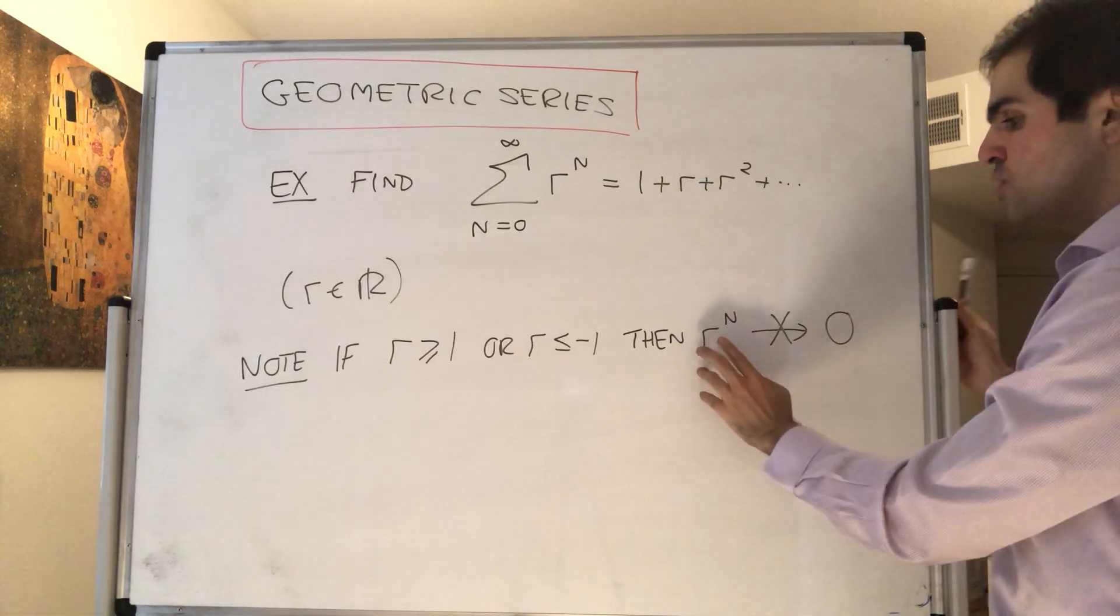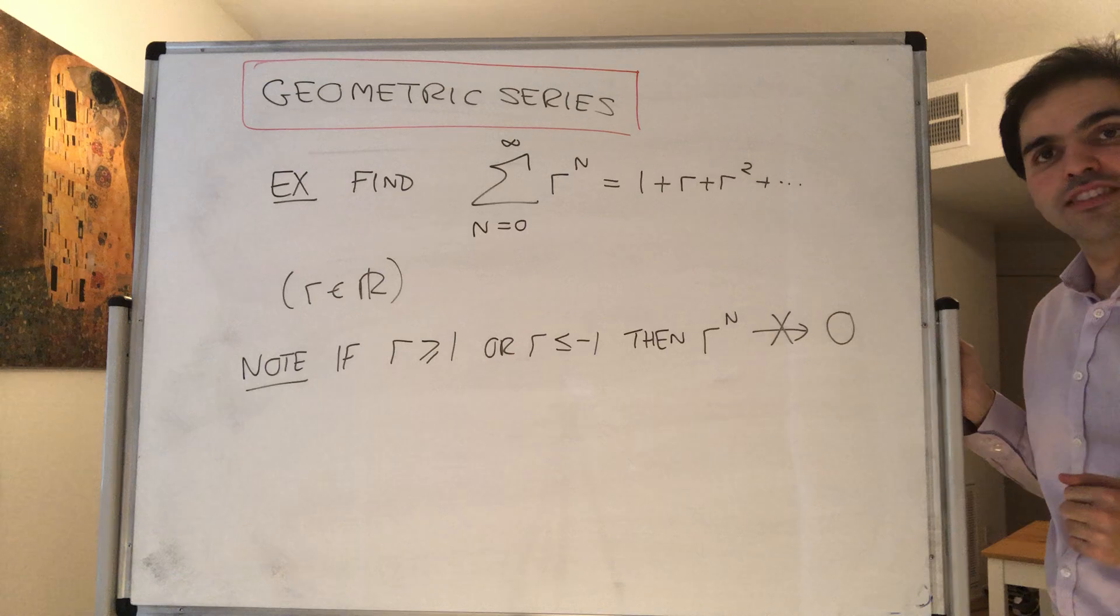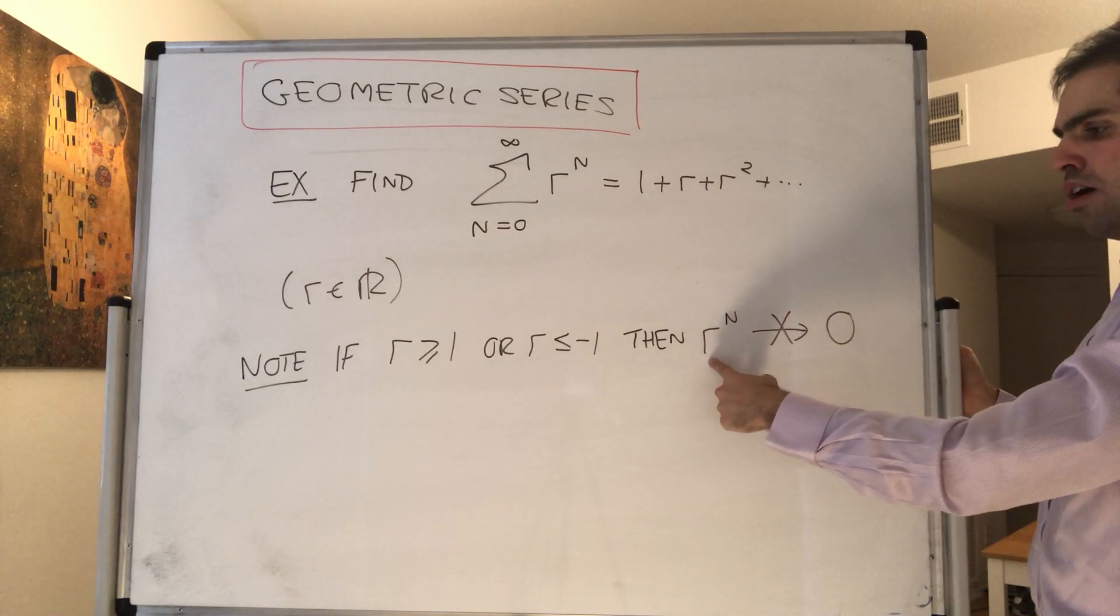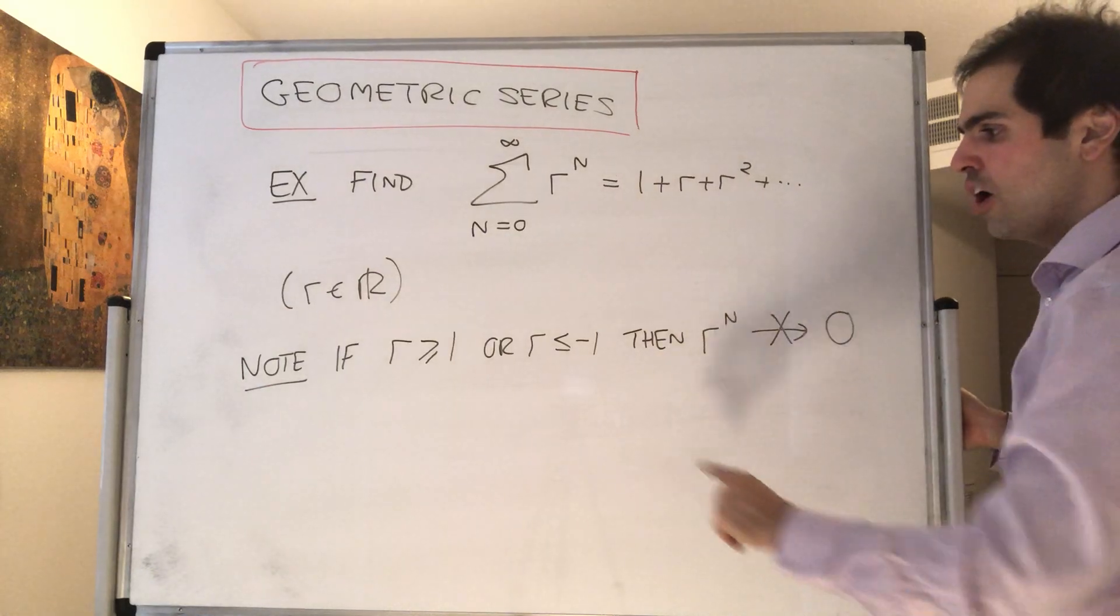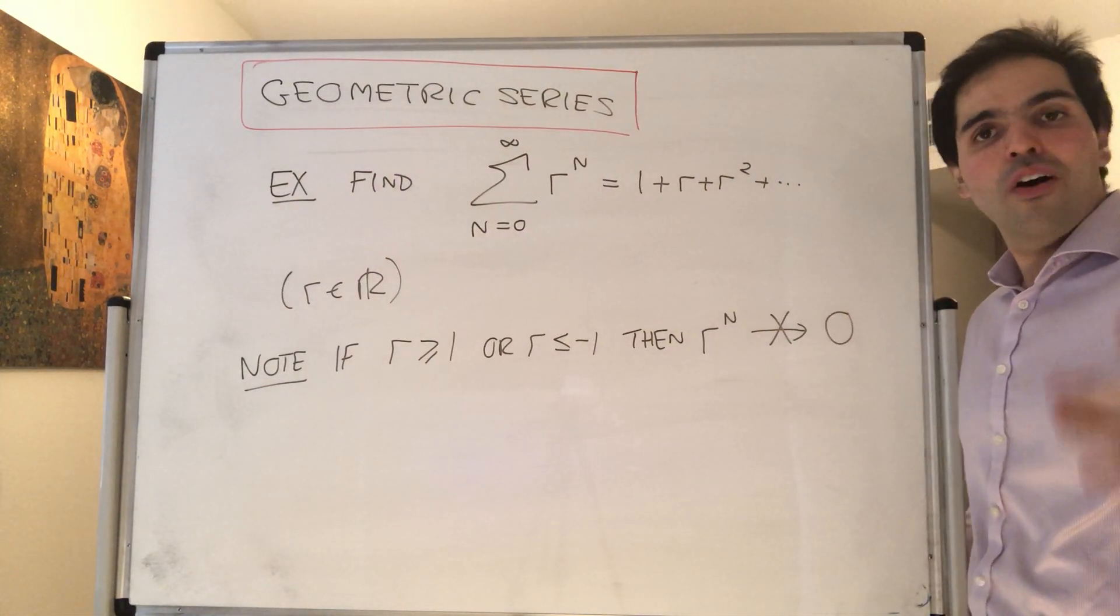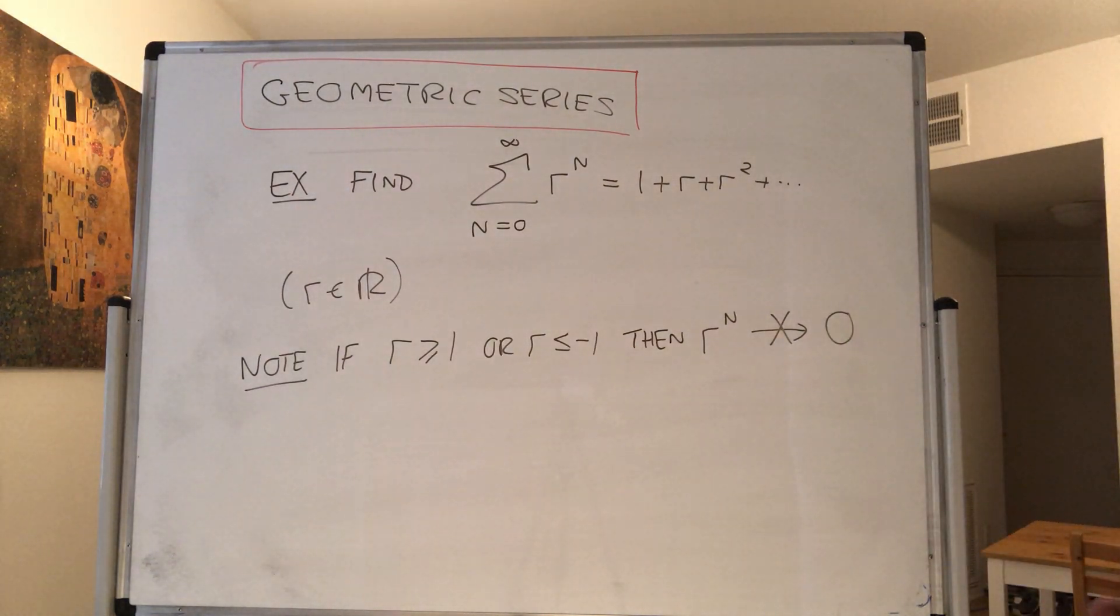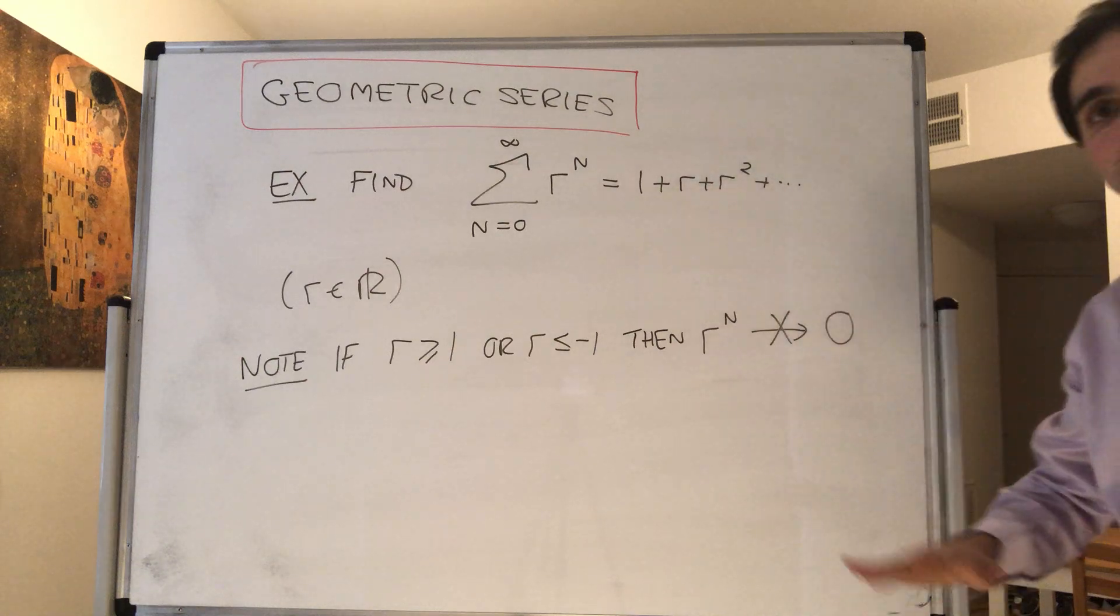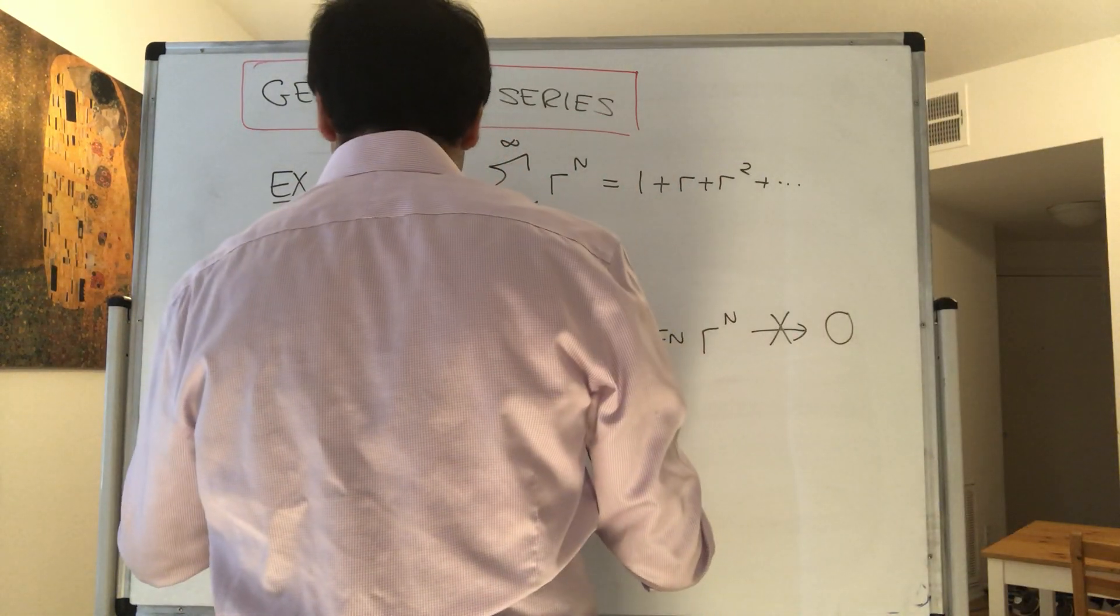Because let's say r is 2, then 2 to the n goes to infinity, which is not 0. If r is 1, 1 to the n goes to 1, which is not 0. If r is minus 1, then minus 1 to the n doesn't even converge, so it doesn't go to 0.